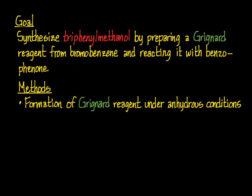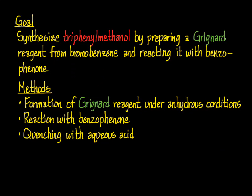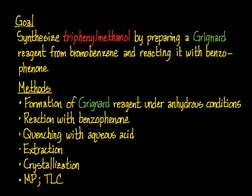The methods you'll use to do this synthesis include the formation of the Grignard reagent under anhydrous conditions, reaction with benzophenone also under anhydrous conditions, quenching the reaction with cold aqueous acid, extraction of the product from the reaction mixture, crystallization, and melting point and TLC analysis.